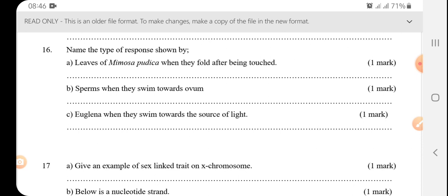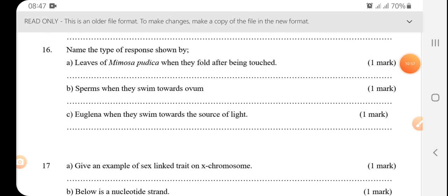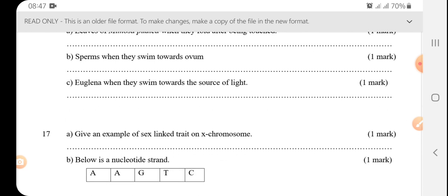Name the type of response shown by leaves of mimosa pudica, when they fall after being touched. So it's called thigmonasty. Sperm, when they swim towards the ovum, it's called chemotaxis. Euglena, when they swim towards the source of light, is called phototaxis. I'm going to write them down.